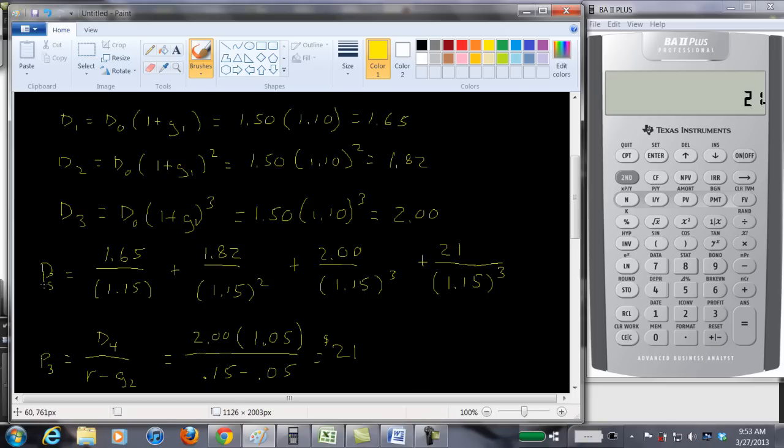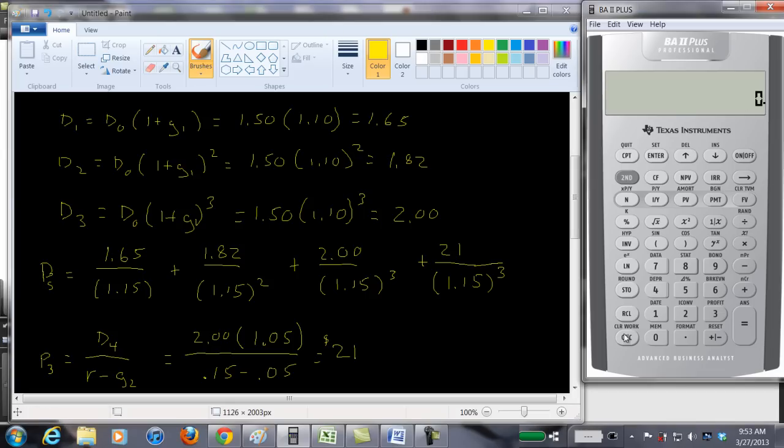So now, to find the price of the stock, we just need to take the present value of these. Okay, we could do them all separately. An easier way to do it is by using the cash flow worksheet. Now, remember to clear the cash flow worksheet, you hit second, clear worksheet. There's nothing in time period zero, so let's just scroll down.